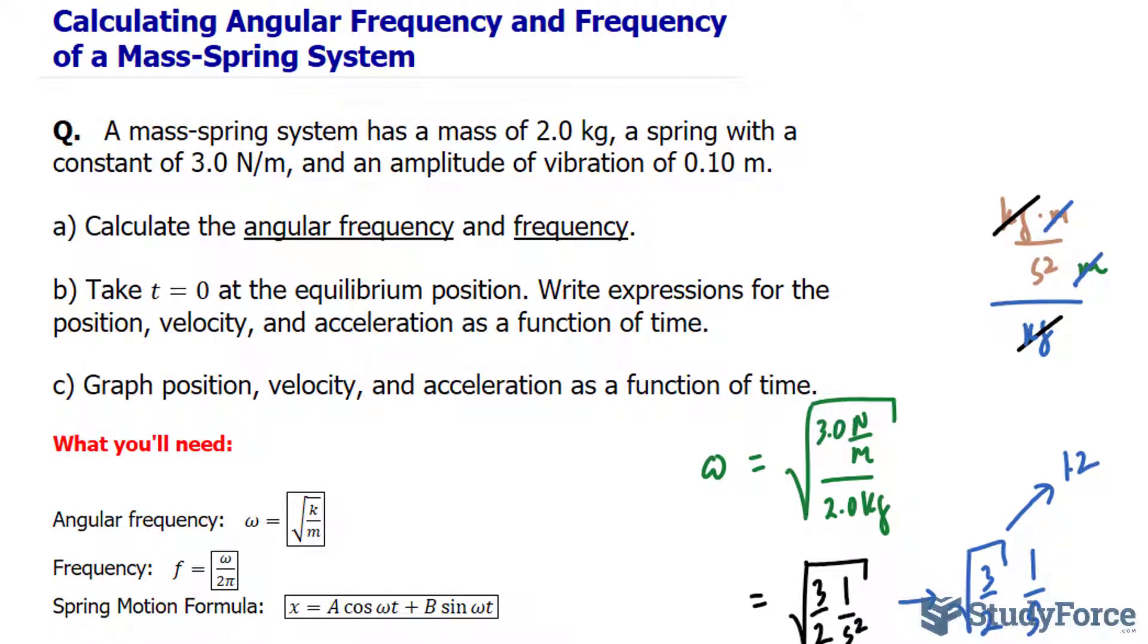For question B, take t is equal to 0 at the equilibrium position. When something's at the equilibrium position, especially a spring-mass system, that means it's not being compressed or elongated. Write expressions for the position, velocity, and acceleration as a function of time.